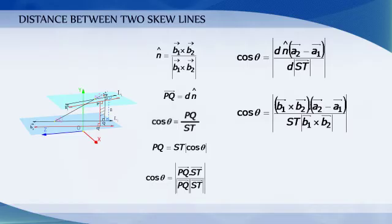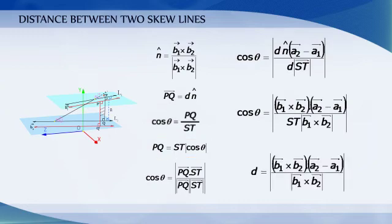The shortest distance d equals PQ which equals ST times modulus of cos theta. We get d equals modulus of B1 vector cross B2 vector dot A2 vector minus A1 vector, the whole thing divided by modulus of B1 vector cross B2 vector.